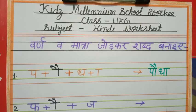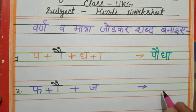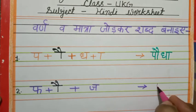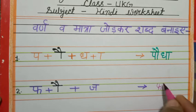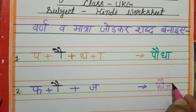Next, dekhiye. Next, rea aap ke — fa, auki matra, dha. Fa, dha. Fa, auki matra, dha. Fa, dha.